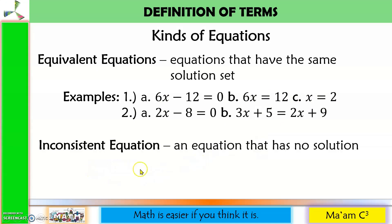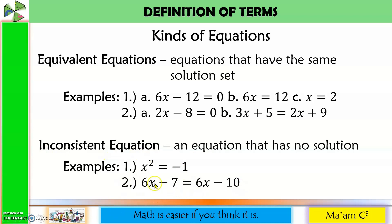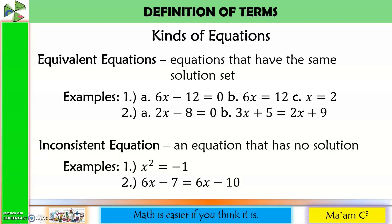An inconsistent equation is an equation that has no solution. For example, the square root of negative 1 gives an imaginary answer, making it inconsistent. In another example, if we cancel 6x on both sides, we get negative 7 is not equal to negative 10, so that is also an inconsistent equation.